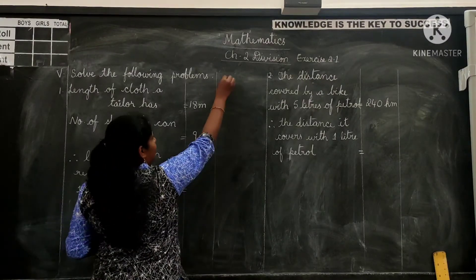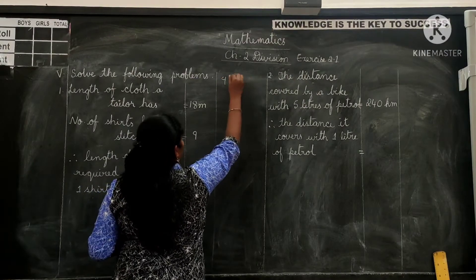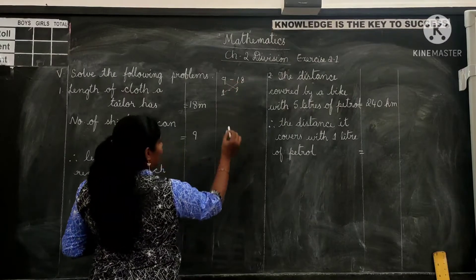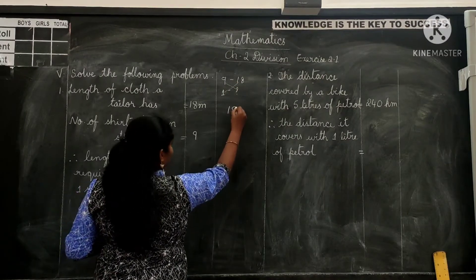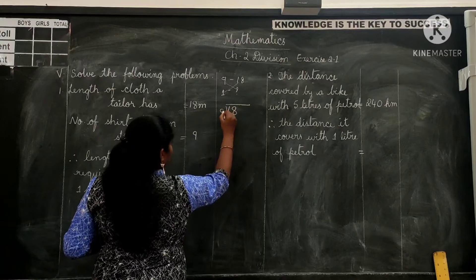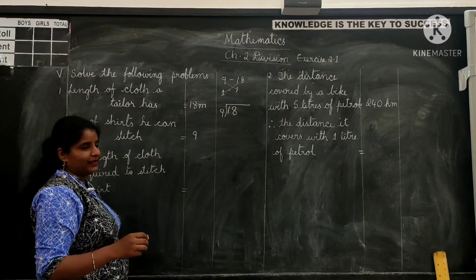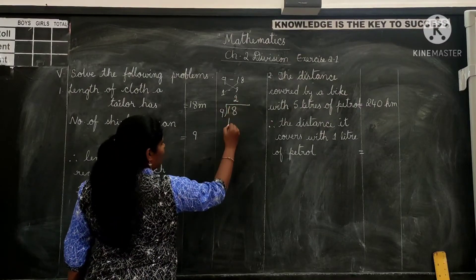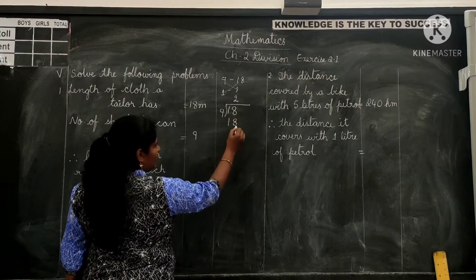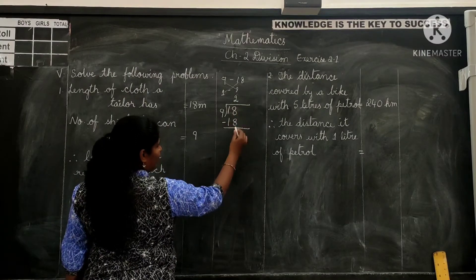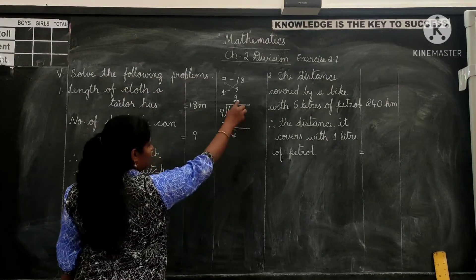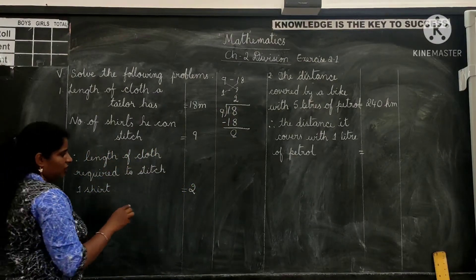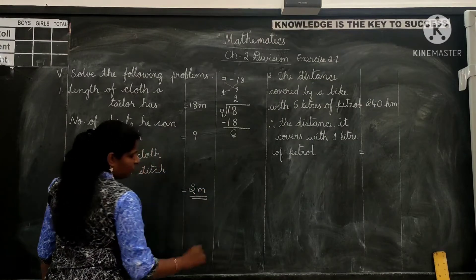To stitch 9 shirts if he needs 80 meters of cloth, to stitch 1 shirt what is the length of cloth he needs? So 1 times 80 divided by 9. The length we do is 80 divided by 9. 9 two times gives you 18. So subtract 18 from 18 to get 0, which means to stitch 1 shirt he needs 2 meters of cloth.